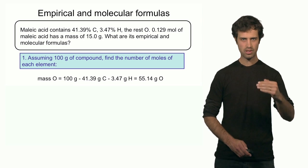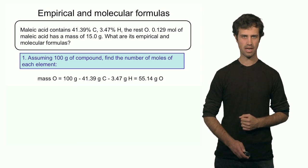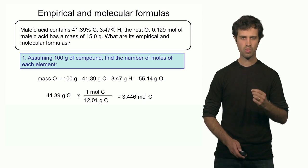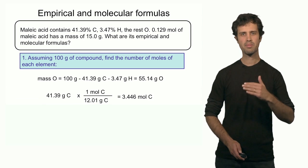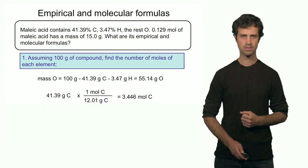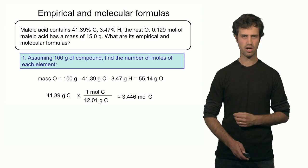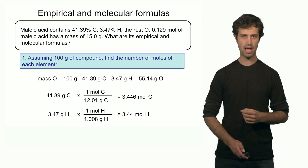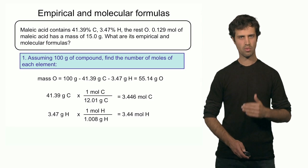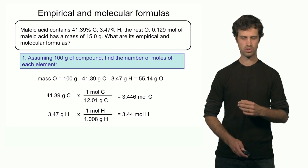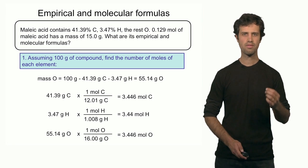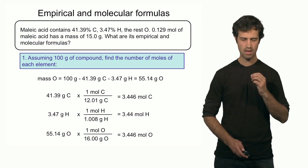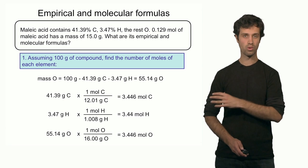Next, I convert these amounts in grams into moles for each element. For carbon: 41.39 grams divided by the molar mass of carbon gives 3.44 moles. For hydrogen: 3.47 grams divided by the molar mass gives 3.44 moles. For oxygen: 55.14 grams divided by the molar mass of oxygen gives 3.446 moles.